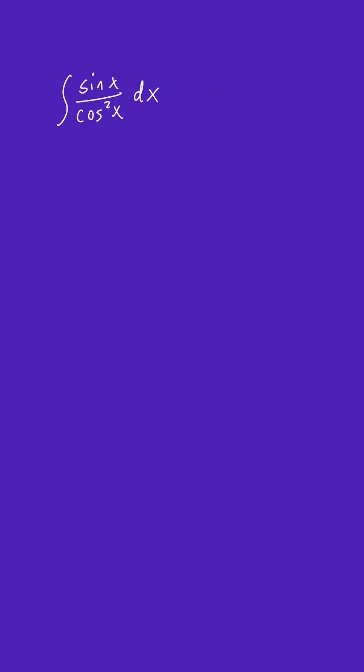And to do that, we need to first understand that cosine squared x is actually equal to cosine x quantity squared. So we can rewrite this as the integral of sine x cosine x to the negative 2 power, because the squared was on the bottom and we'll bring it to the numerator so it becomes negative 2. And that's dx.